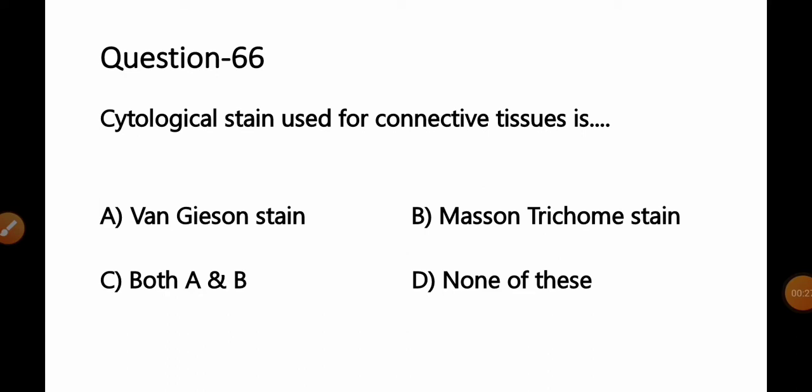Let's start today's MCQs. Question number 66: Cytological stain used for connective tissues is — Option A: Van Gesson stain; B: Masson's Trichrome stain; C: both A and B; D: none of these.